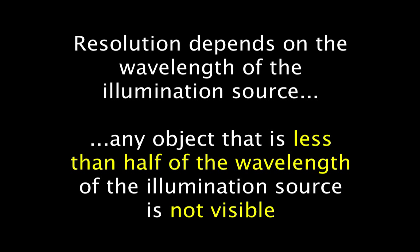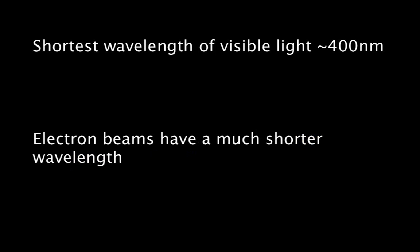Any object that you're trying to look at that is less than half of the wavelength of that source will not be visible. Now, the shortest wavelength of visible light is approximately 400 nanometres. Actually, a little lower than that, but for all intents and purposes, we'll go with 400.